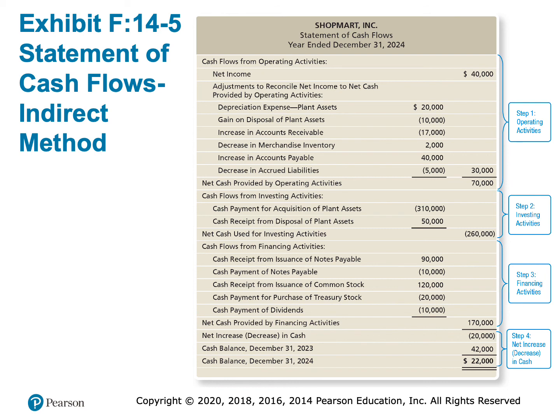Now we can see the entire statement. Hopefully your statement of cash flows looks very similar to this one. We have the three-line heading — company name, name of the statement, and the year-end date of December 31, the same as the income statement. We started with net income, made all adjustments for operating activities, then covered investing and financing, and totaled everything at the end. I hope you've enjoyed this class and learned a lot — good luck in the rest of your accounting studies.